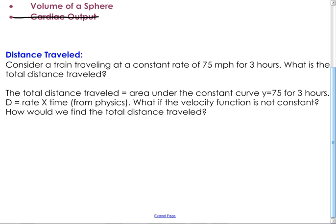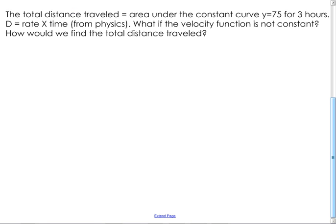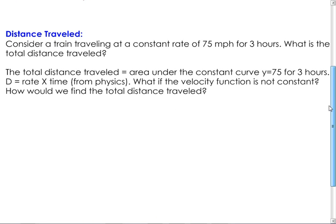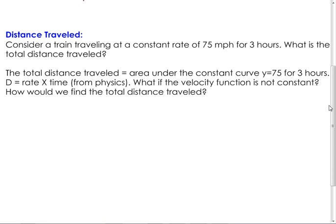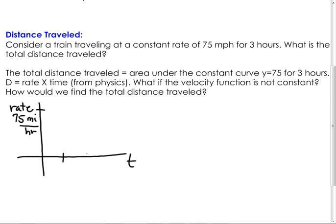Consider a train traveling at a constant rate of 75 miles per hour for three hours. What is the total distance traveled? I'm going to draw a picture. Here's my time axis, here's my rate. This is 75 miles per hour, and here's one, two, three hours. You're going at a constant rate for three hours. How far have you gone?